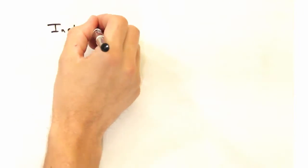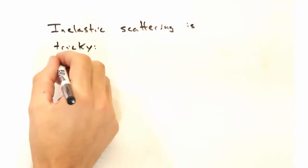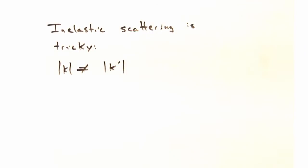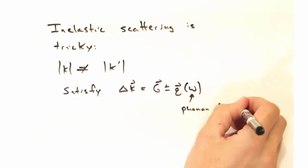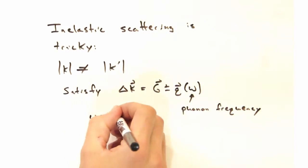So inelastic scattering is really pretty tricky. The magnitude of k is not going to equal the magnitude of k prime, although in some cases we approximate it as such. And generally we're going to have to think about satisfying this delta k equals g plus or minus q criteria.